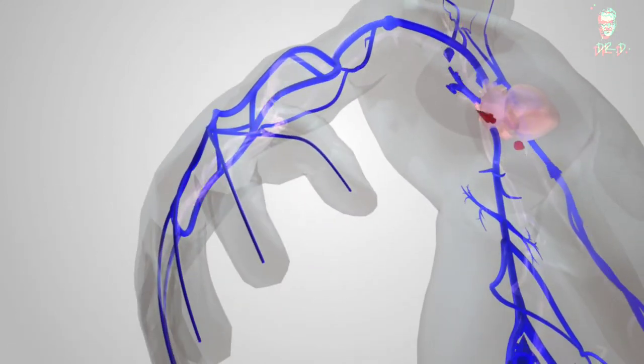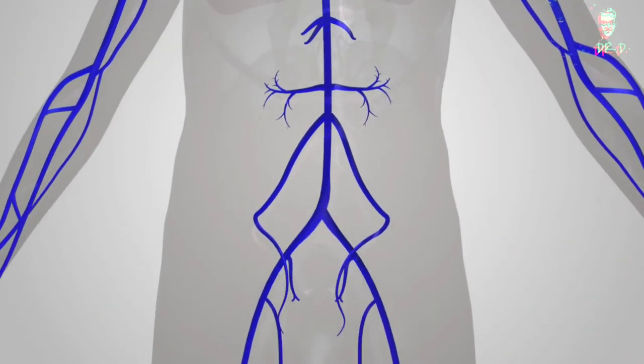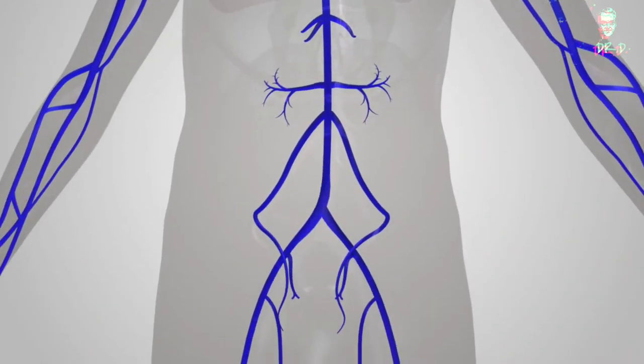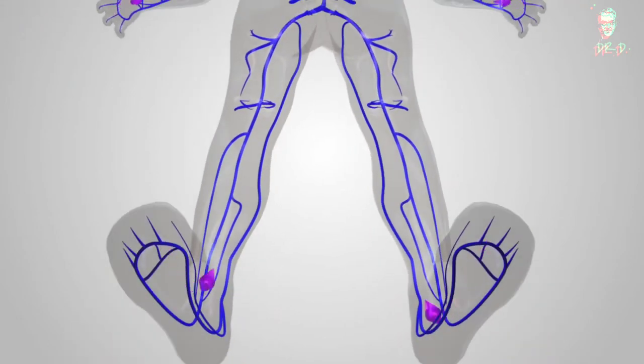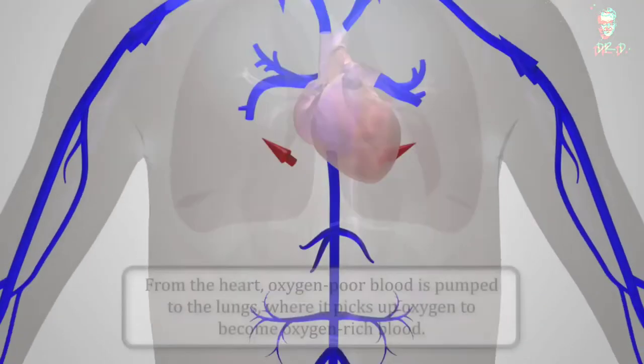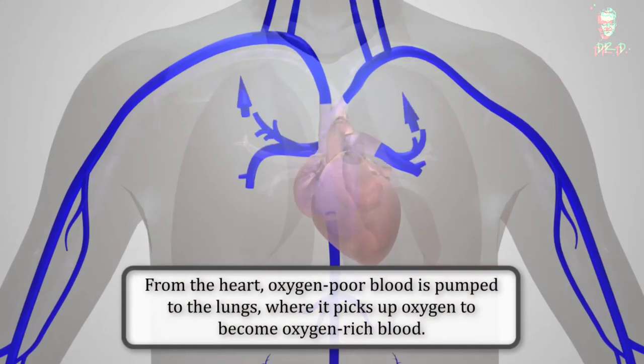How does blood flow through the heart? Blood flows through your heart and lungs in four steps. The right atrium receives oxygen-poor blood from the body and pumps it to the right ventricle through the tricuspid valve. The right ventricle pumps the oxygen-poor blood to the lungs.